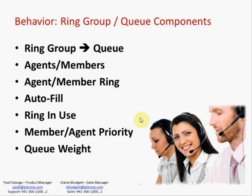As you're looking at ACD, it is rooted in the ring group. The ring group takes on the characteristics because of the added features of a queue. Although the ring group is very powerful in and of itself on the Epitome platform, it is a basic queue, and obviously the additional features that ACD gives you add to the capabilities of what that queue can do for your client. So it becomes an add-on opportunity and a sell-up when you're deploying the solution. We're going to look at agents and members, compare the two, agent and member ringing, autofill, ring in use, agent member priority, and queue waiting.